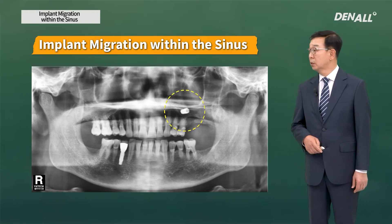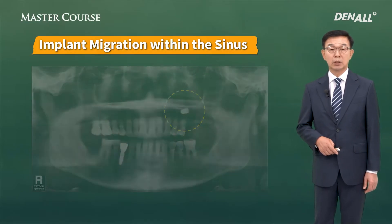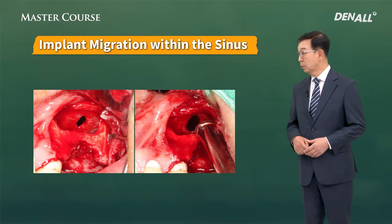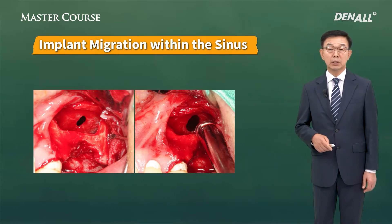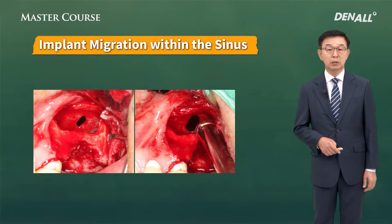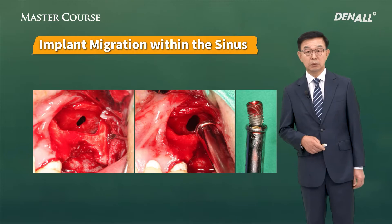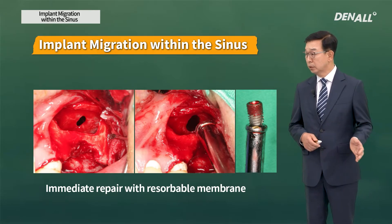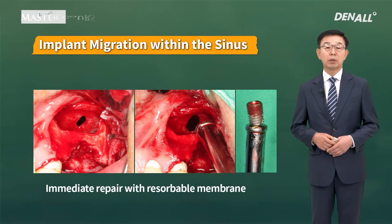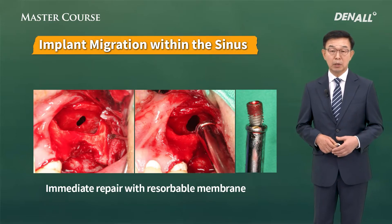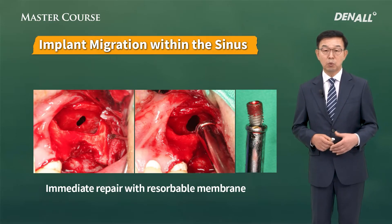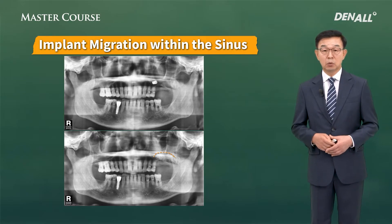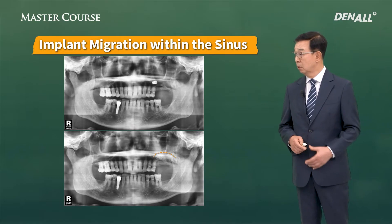In this patient's case, in number 20, the implant migrated into the sinus. Lateral window approach was taken. Because I needed to remove the implant, I perforated the sinus membrane intentionally. You need to use a large-sized suction tip and insert it into the sinus. When you turn it on, with negative pressure, the implant comes out. If you are confident or if the sinus membrane is sound, you can repair the sinus membrane immediately using a resorbable membrane, do bone graft, and decide whether to place the implant at the same time or to wait. In this case, the implant was removed, the sinus membrane was repaired, and bone graft was done simultaneously.